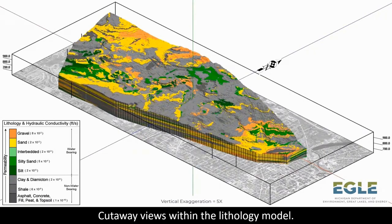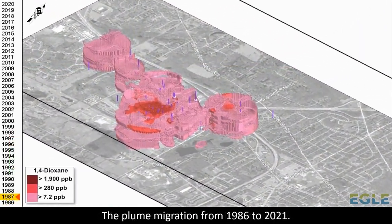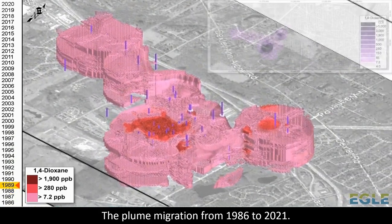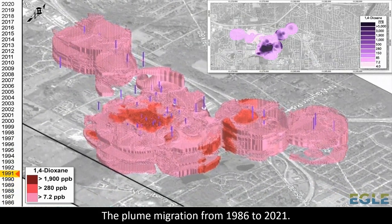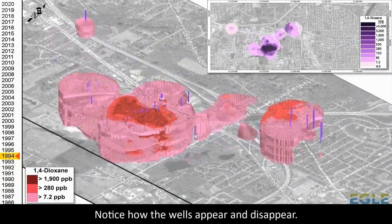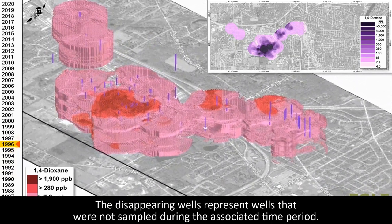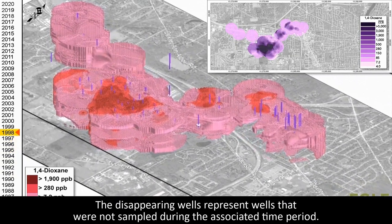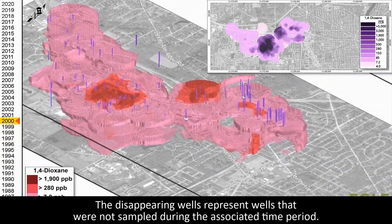The plume migration from 1986 to 2021 — notice how the wells appear and disappear. The disappearing wells represent wells that were not sampled during the associated time period.